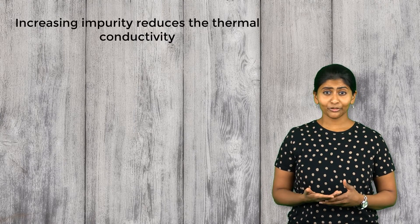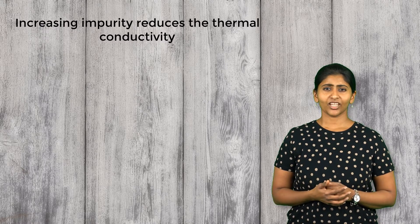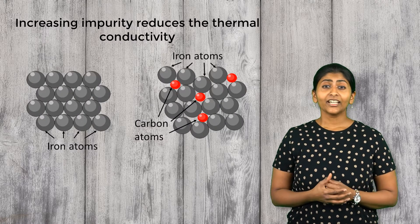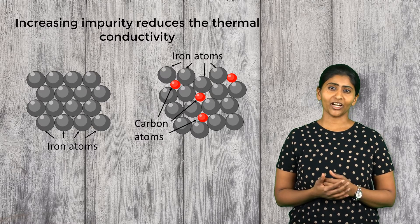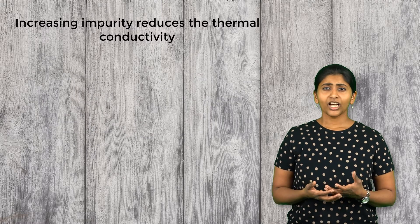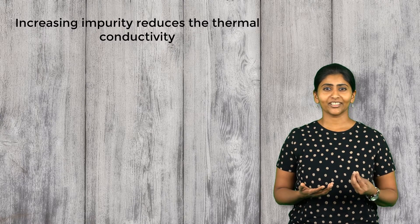Thermal conductivity may be affected by a number of factors like impurities and porosity. Increasing the amount of impurities in a material reduces its thermal conductivity. For steel with only 1% carbon, the thermal conductivity is 40% lower than that of pure iron.